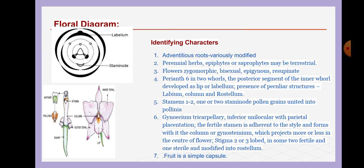Identifying Characters: Adventitious roots variously modified. Perennial herbs — epiphytes or saprophytes, may be terrestrial. Flowers zygomorphic, bisexual, epigynous, resupinate.